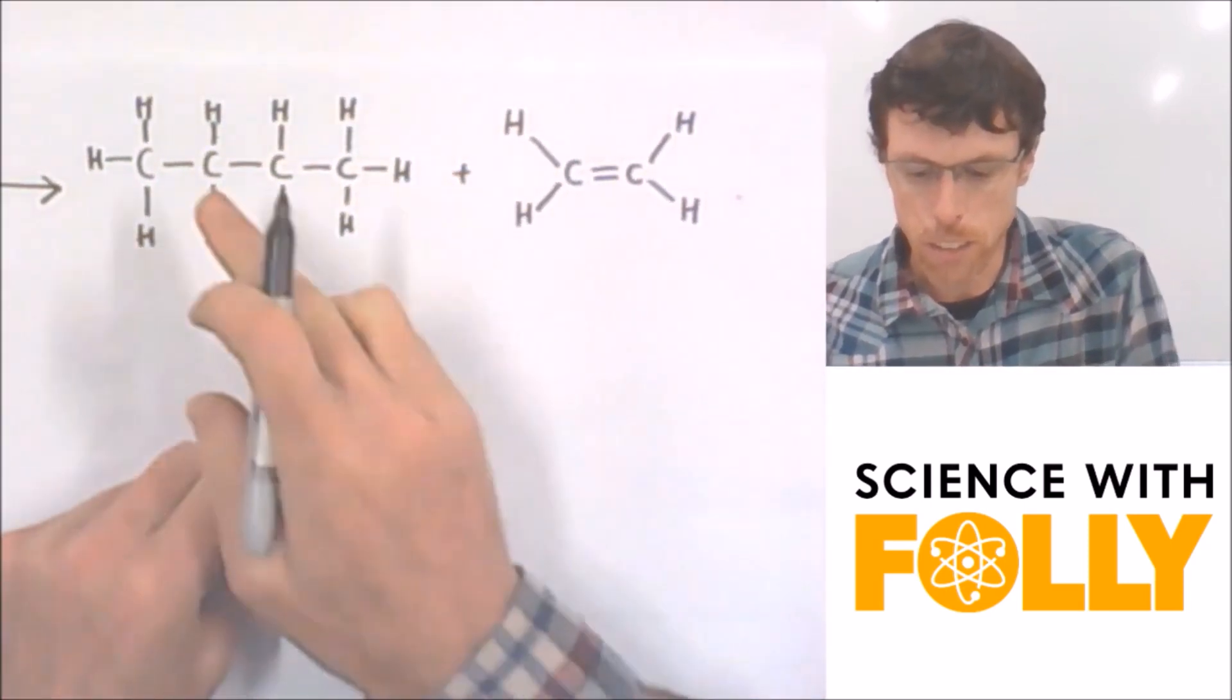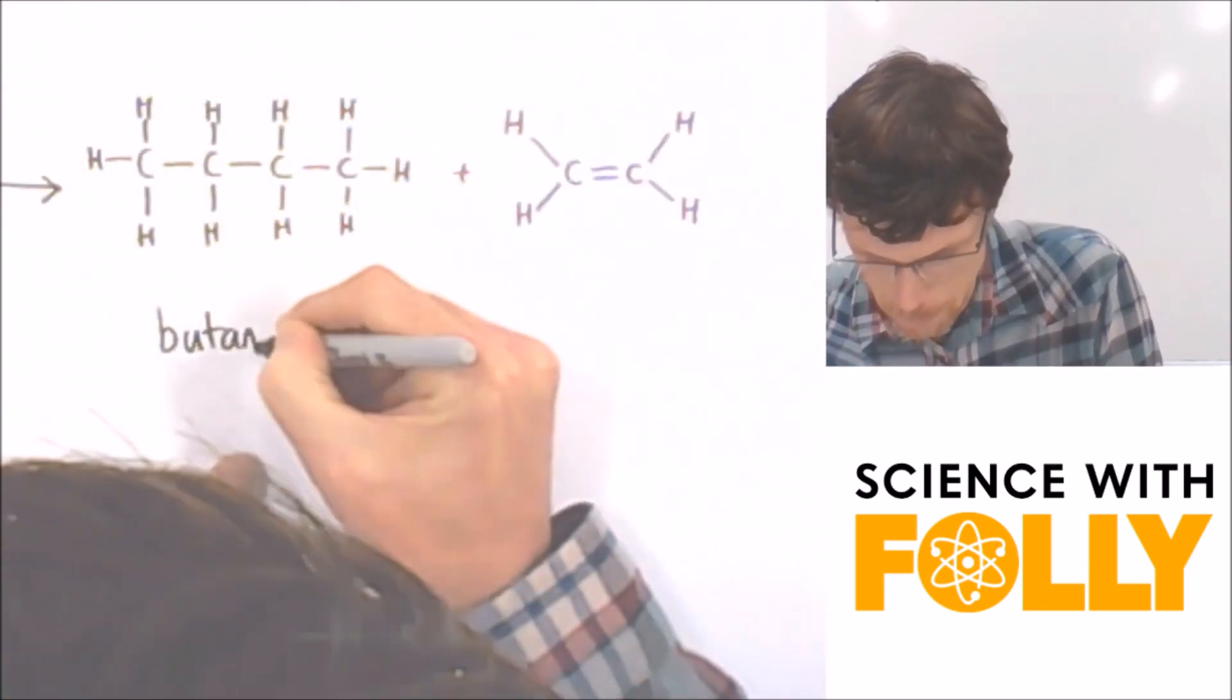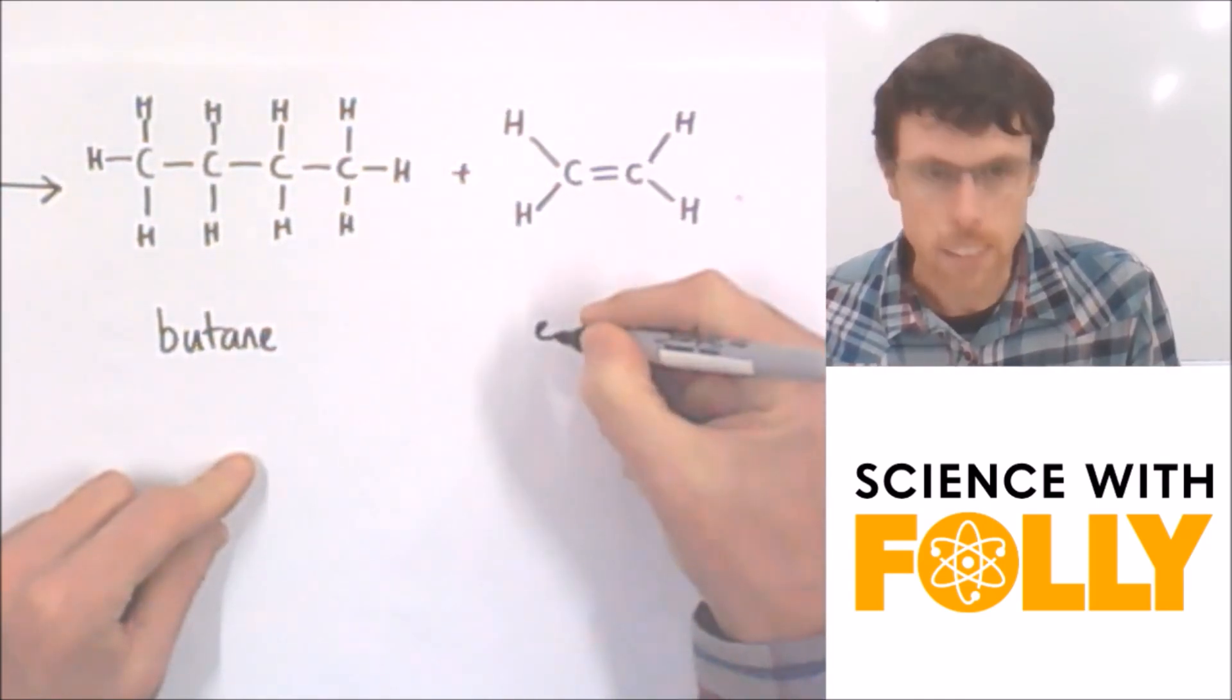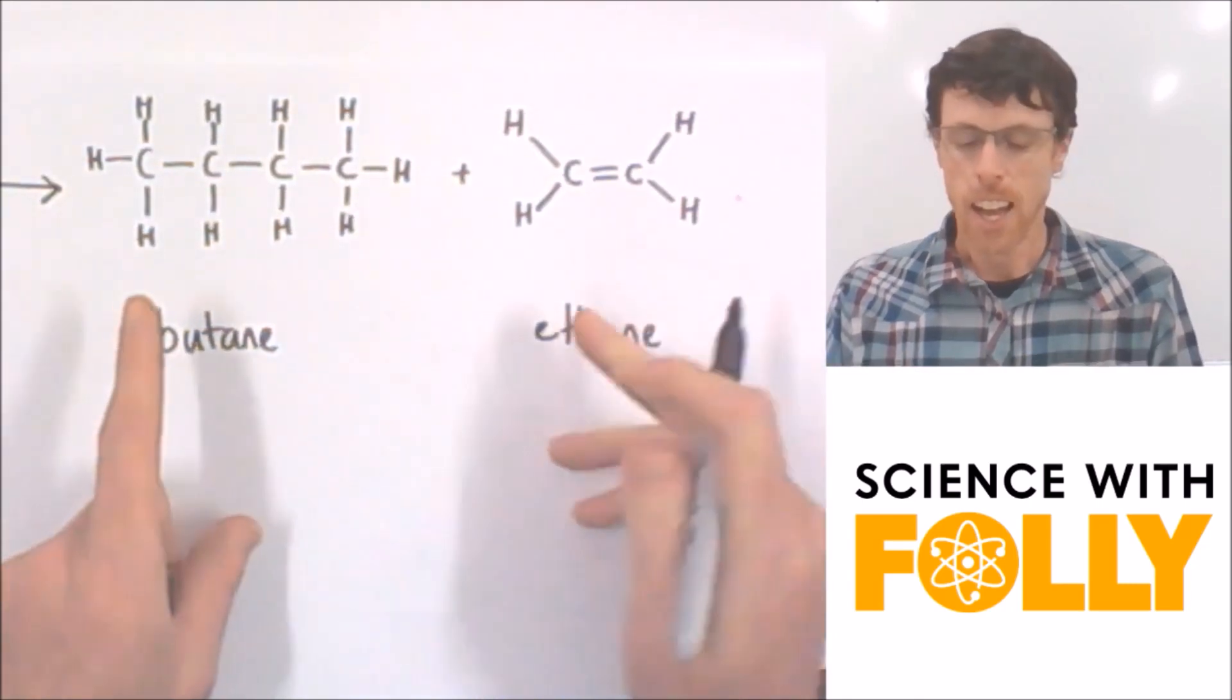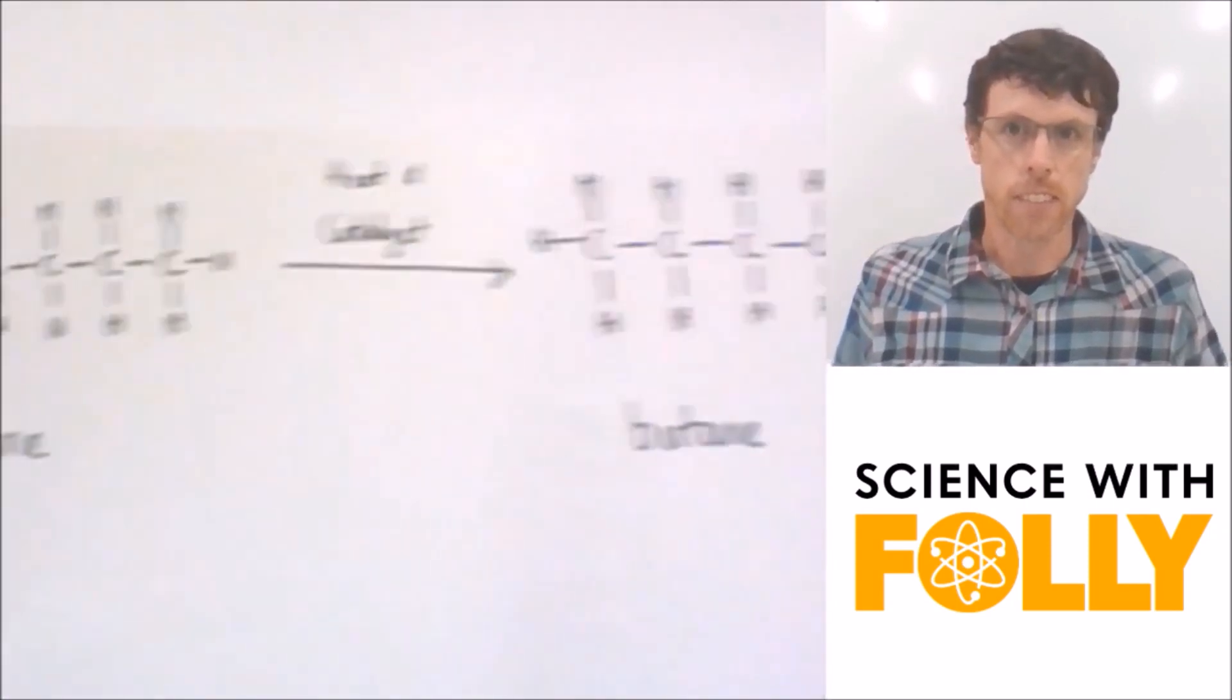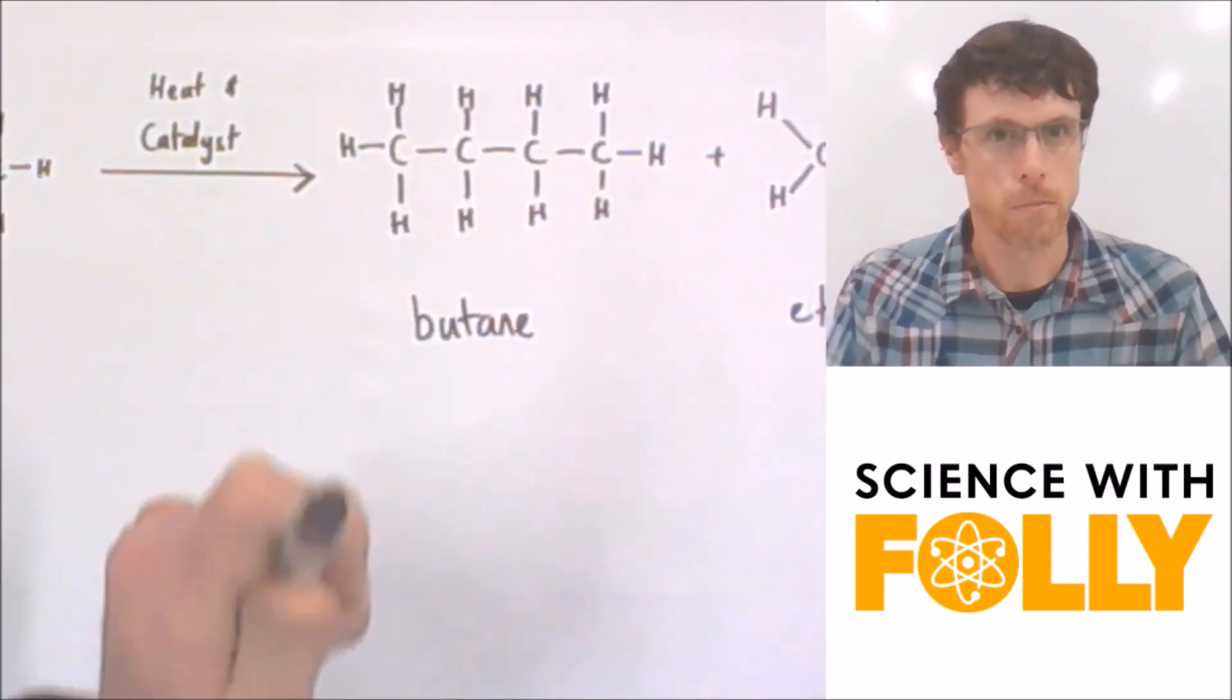And over here we've got 1, 2, 3, 4. So what's that? Butane. And over here I've got 1, 2 with a double bond. That's gonna be ethene. No, ethene. Had you tricked there didn't I? And as you can see we've got the same number of carbons and hydrogens on each side of the equation. Remember the law of conservation of mass? Sweet.